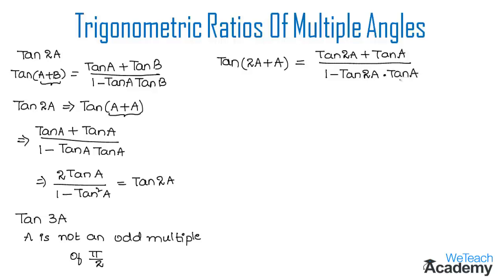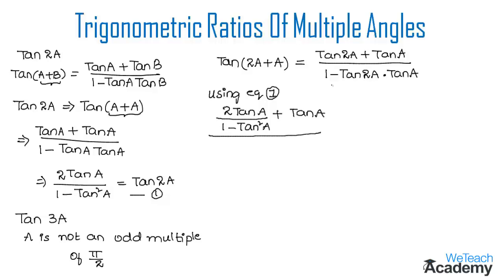We already know the formula for tan 2a, which is 2 tan a / (1 - tan²a) — let us call this equation 1. Substituting equation 1 into the expression, the numerator becomes (2 tan a)/(1 - tan²a) + tan a, and the denominator becomes 1 - [2 tan a / (1 - tan²a)] · tan a.